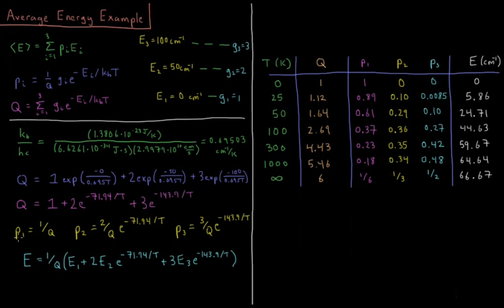What are the probabilities of each level? That's 1 over q times their degeneracy times their Boltzmann factor. So the probability of level 1 is 1 over q, degeneracy of 1, Boltzmann factor of 1 divided by q. P2 equals 2 divided by q times e to the minus 71.94 over t. P3 equals 3e to the minus 143.9 over t divided by q.